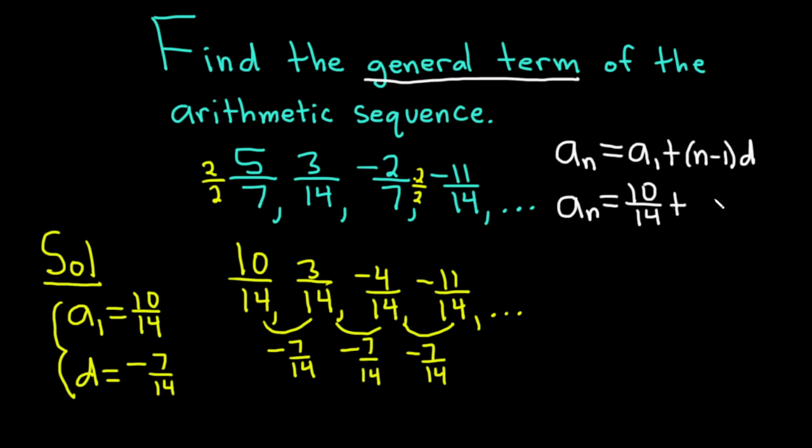And plus, and we have n minus 1, and d is negative 7 over 14. So let's go ahead and replace that with negative 7 over 14.